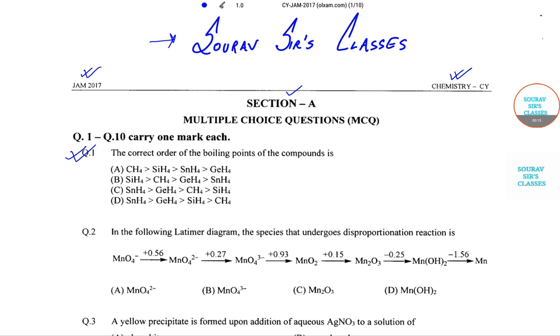The first question is the correct order of boiling points. We have been provided with many compounds with carbon, hydrogen, silicon, tin, germanium, and many combinations of these. Now the question is, the correct order of boiling points of the compound will be given by?